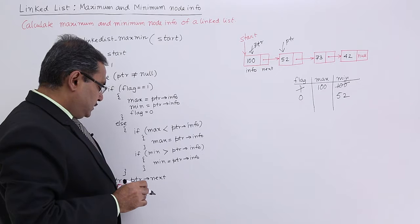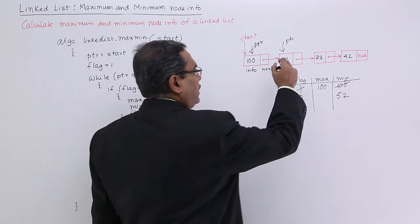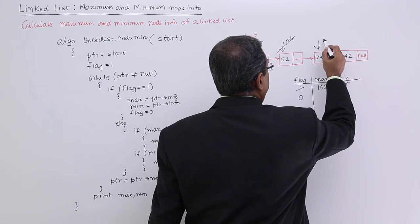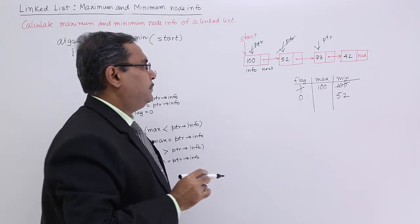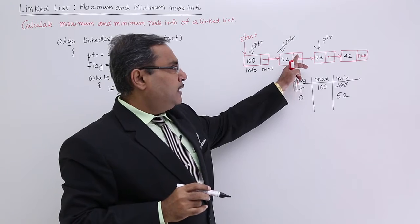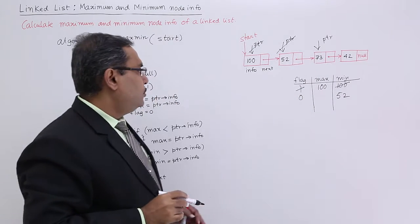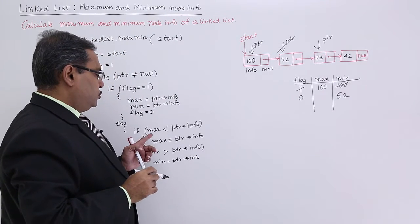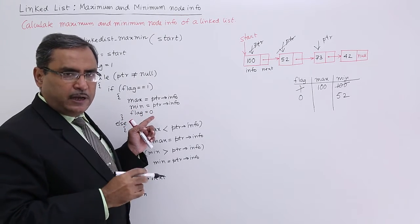After doing this updation, ptr = ptr->next is the common line, so ptr is getting updated with this address, the address of this next node. So now 73—this part cannot get executed because flag has become 0.